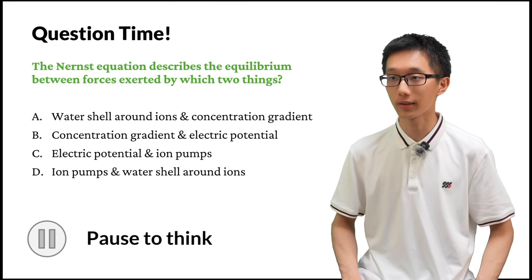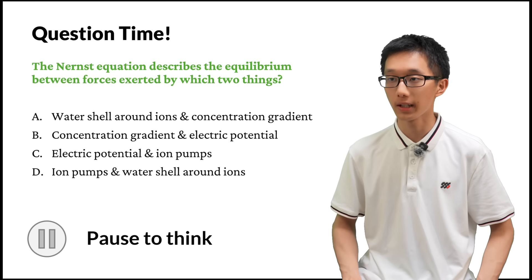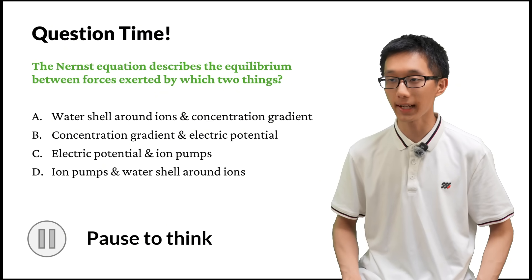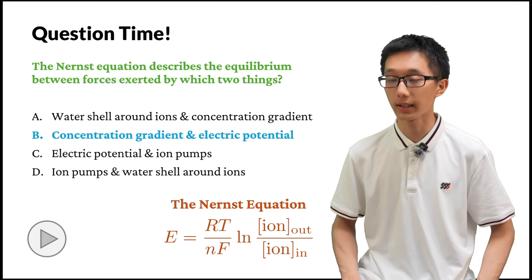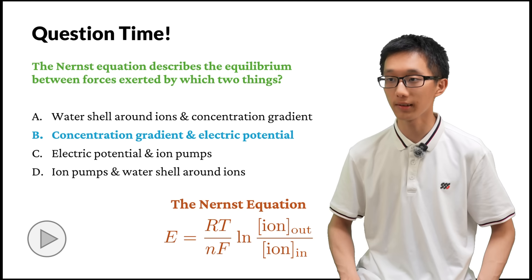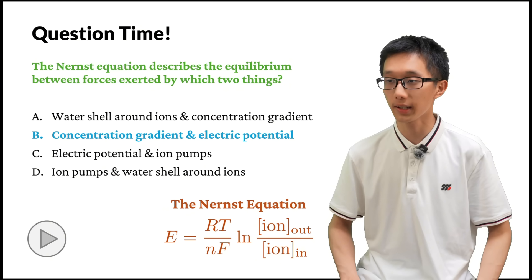A quick review question: the Nernst equation describes the equilibrium between two forces exerted by which two things? a) The water shell around ions and the concentration gradient. b) The concentration gradient and the electric potential. c) The electric potential and ion pumps. d) Ion pumps and water shell around ions. The answer is b — the concentration gradient and the electric potential. On the left side of the Nernst equation we have the equilibrium potential of the ion, and on the right side we have a bunch of constants times ln of the concentration of ion outside over concentration of ion inside, describing the concentration gradient.